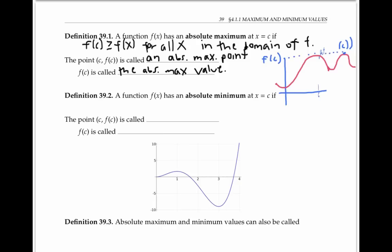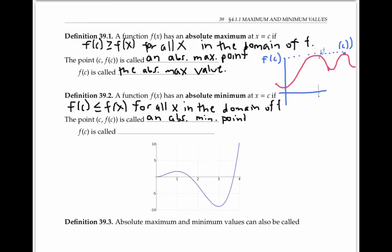A function f of x has an absolute minimum at x equals c, if f of c is less than or equal to f of x for all x in the domain of f. In this case, the point (c, f(c)) is called an absolute minimum point, and the y value f of c is called the absolute minimum value.